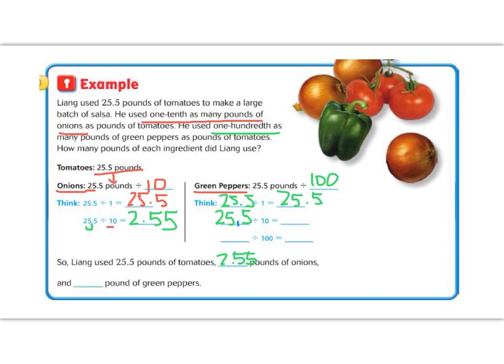Now we're going to keep 25.5, but now we're going to divide by 10. And when we divide by 10, our decimal is going to move 1 place to the left. So now we're going to have 2.55, just like we had over here when we divided by 10. Now we're going to divide by 100. So I had 25.5. And I'm going to divide by 100. 100 has two zeros. So I'm going to go 1, 2 decimal places. So I have 0.255. So he had 0.255 pounds of green peppers.